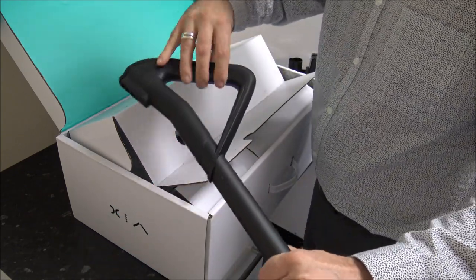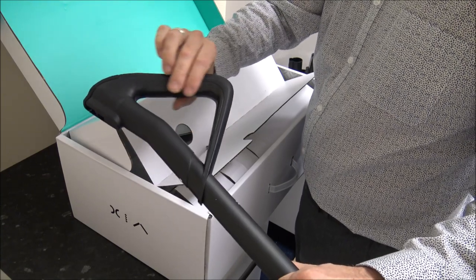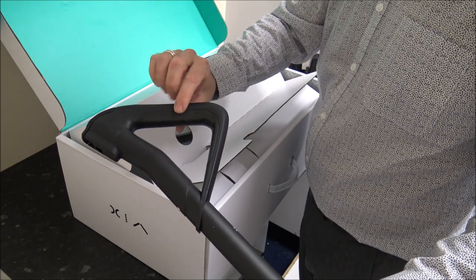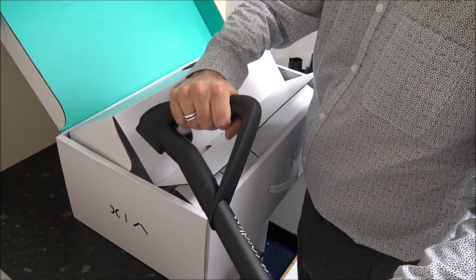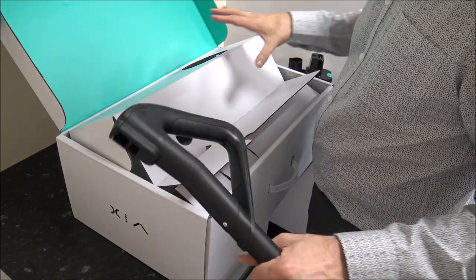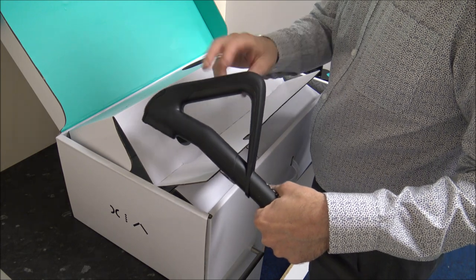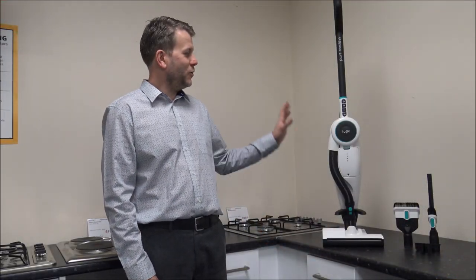The handle at the top here has got like a rubber inlay, and this is something that one or two manufacturers have started to do, and it makes life so much easier when you're actually using the vacuum. So what I'll do is I'll clear the box away and let's get everything set up. So now everything's unboxed, and here she is, the Loop Pure Cordless Vacuum Cleaner.